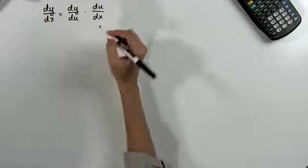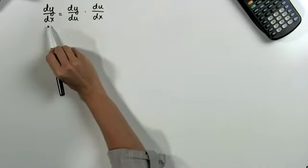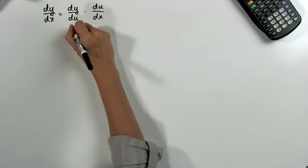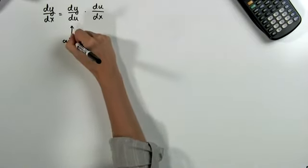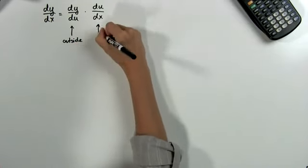Now it's a lot easier to think of this informally. What this means is that the derivative of the whole thing is equal to the derivative of the outside function times the derivative of the inside function.